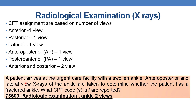Let us look at an example. A patient arrives at the urgent care facility with a swollen ankle. Antero-posterior and lateral views — here two views are taken into consideration: one view for antero-posterior and one view for lateral — of the ankle are taken to determine whether the patient has a fractured ankle. What CPT is reported? The answer is 73600: radiologic examination, ankle, two views.